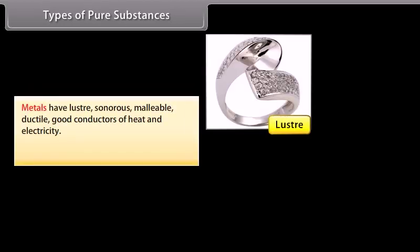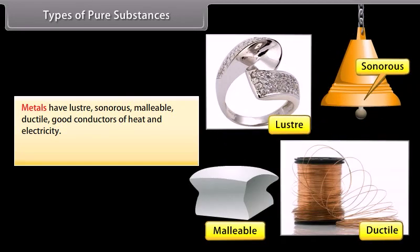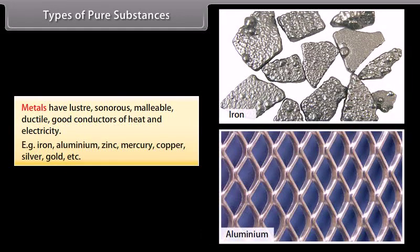Metals have luster, are sonorous, malleable, ductile, and are good conductors of heat and electricity. Examples include iron, aluminum, zinc, mercury, copper, silver, gold, etc.